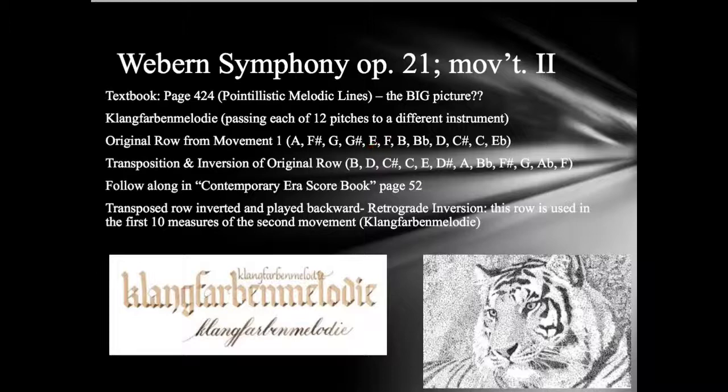The P0 row is: A, F-sharp, G, G-sharp, E, F, B, B-flat, D, C-sharp, C, E-flat. Next to it, you will see how he transposes that row up a half-step and then inverts it. So it's a transposition and an inversion of P0.